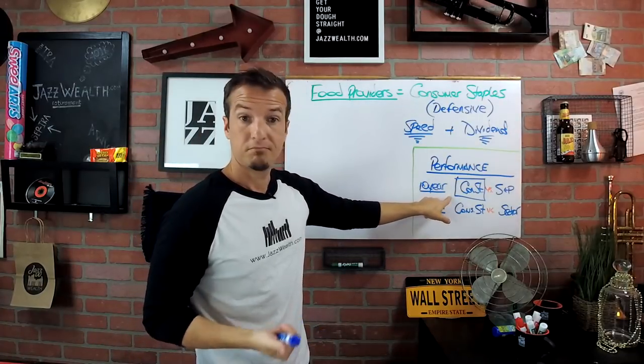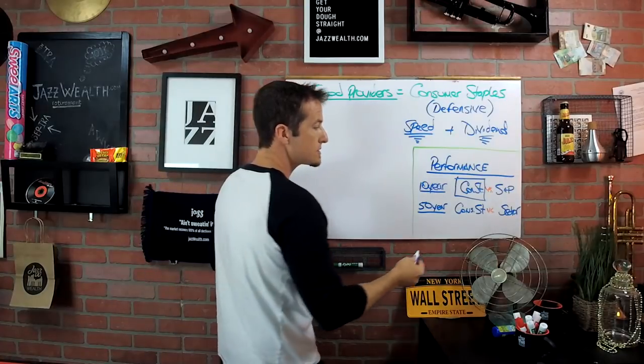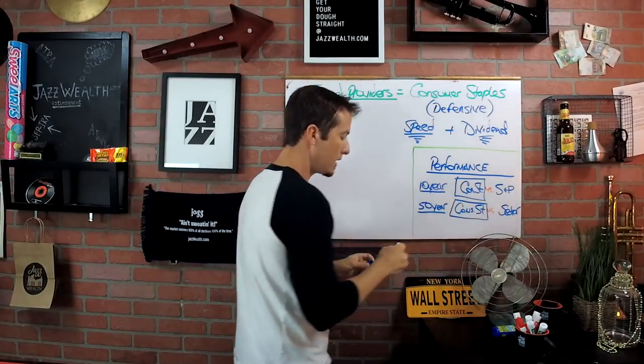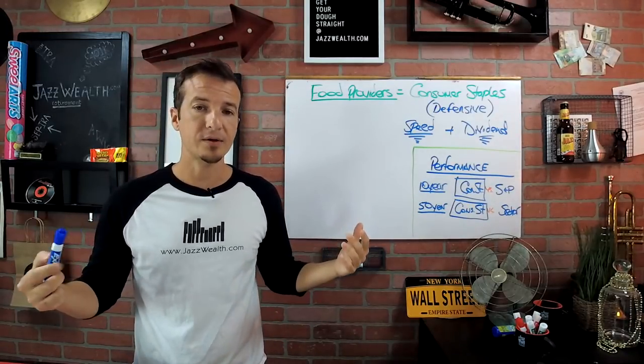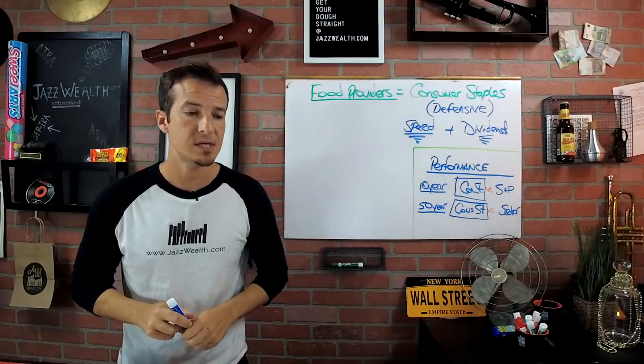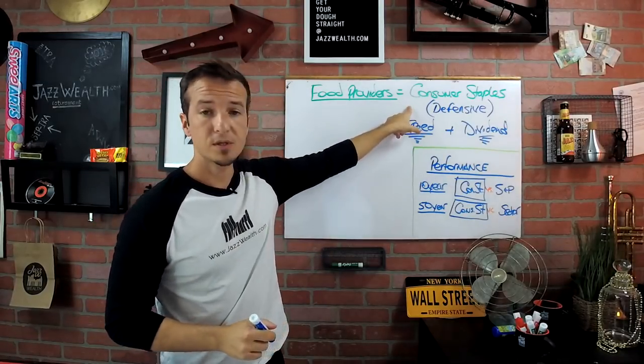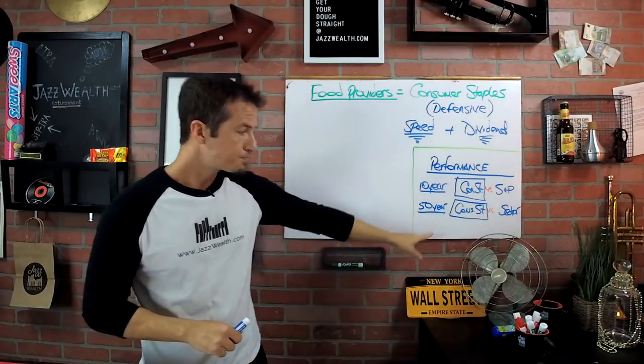There you go, another example. Over the last 50 years, consumer staple stocks beat every sector besides one. So if all you did was invest in sector ETFs and you said, 'That's just the way I do it man, I like buying my sector ETFs, I get a little bit of everything - I got my tech, I got my banks in there, I got my consumer discretionary, my consumer staples.'